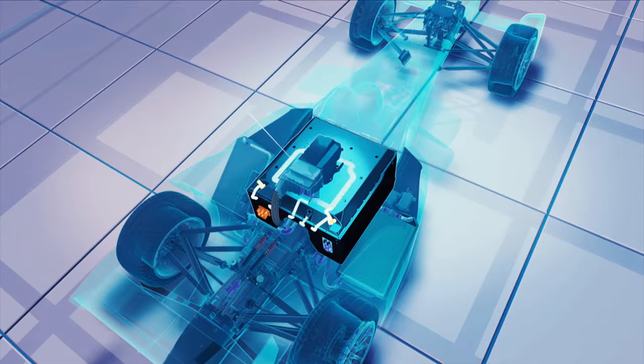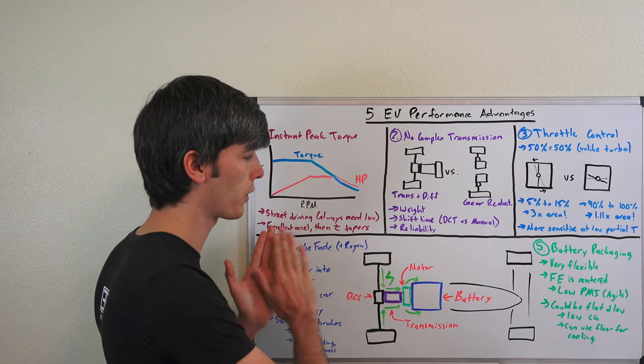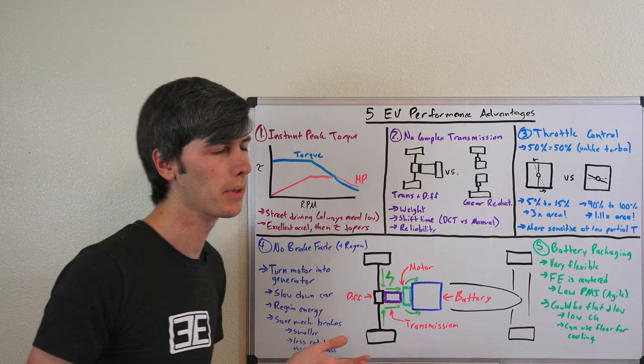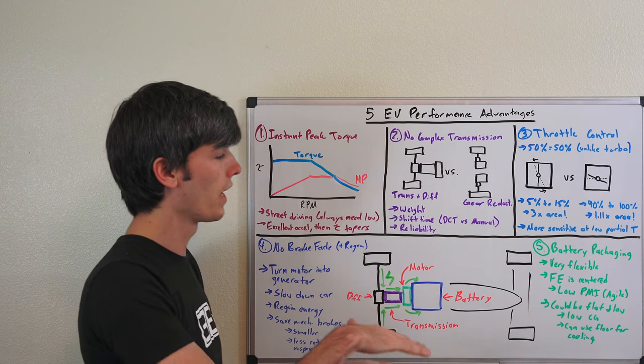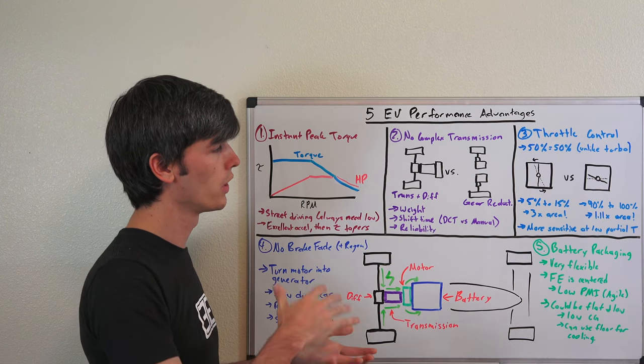But again, this is something very flexible. You could just take a battery and make it very flat and wide and put it along the bottom of the car. Have a nice even weight distribution and keep the center of gravity really low. And also by having it on the bottom of the car, you can help out with cooling and use that airflow underneath the car to help cool that battery.